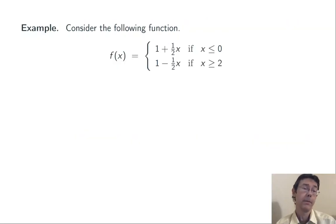Here's an example. The function f of x is equal to one plus one half x if x is less than or equal to zero, and one minus one half x if x is greater than or equal to two.